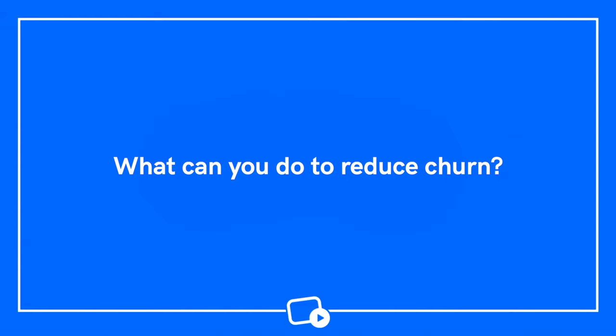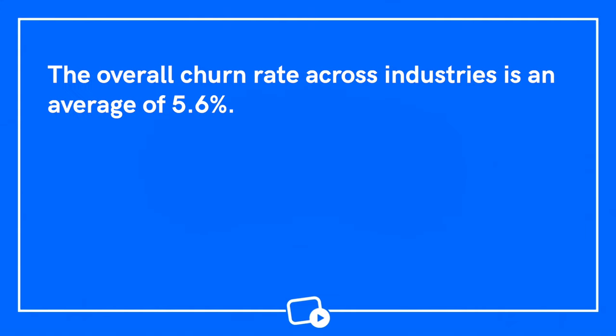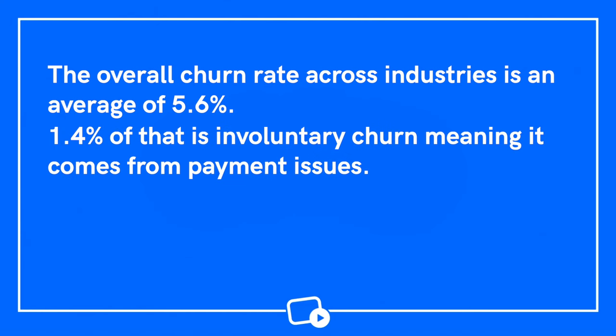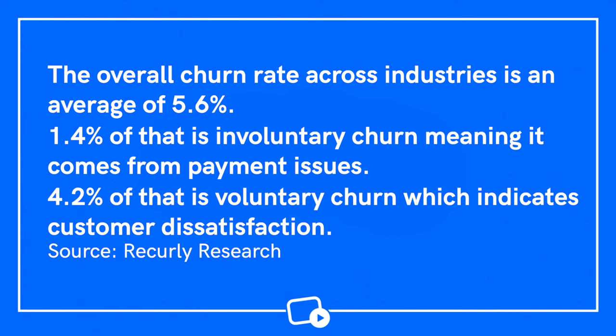So what can you do? Once you've figured out your churn rate, it'll be helpful to have something to compare it against. The overall churn rate across industries averages 5.6% — 1.4% of that is involuntary churn from things like payment issues, while 4.2% is voluntary churn indicating customer dissatisfaction. If your churn rate is in the range of 5% to 7%, you're probably doing all right. But if it's higher than 7%, it's probably a good idea to initiate an audit of your own business.